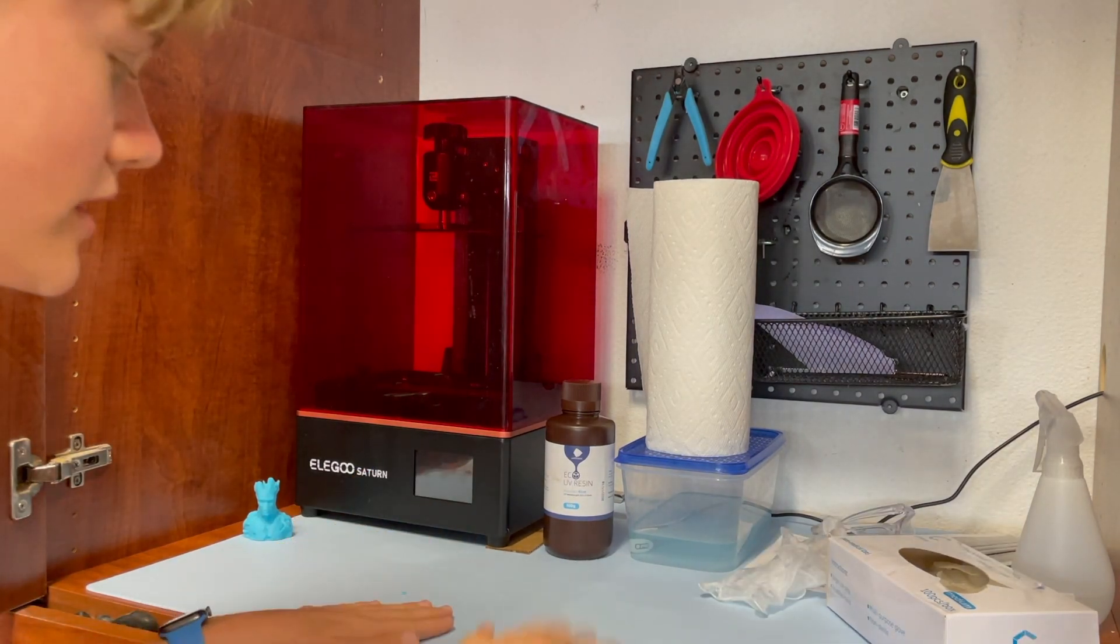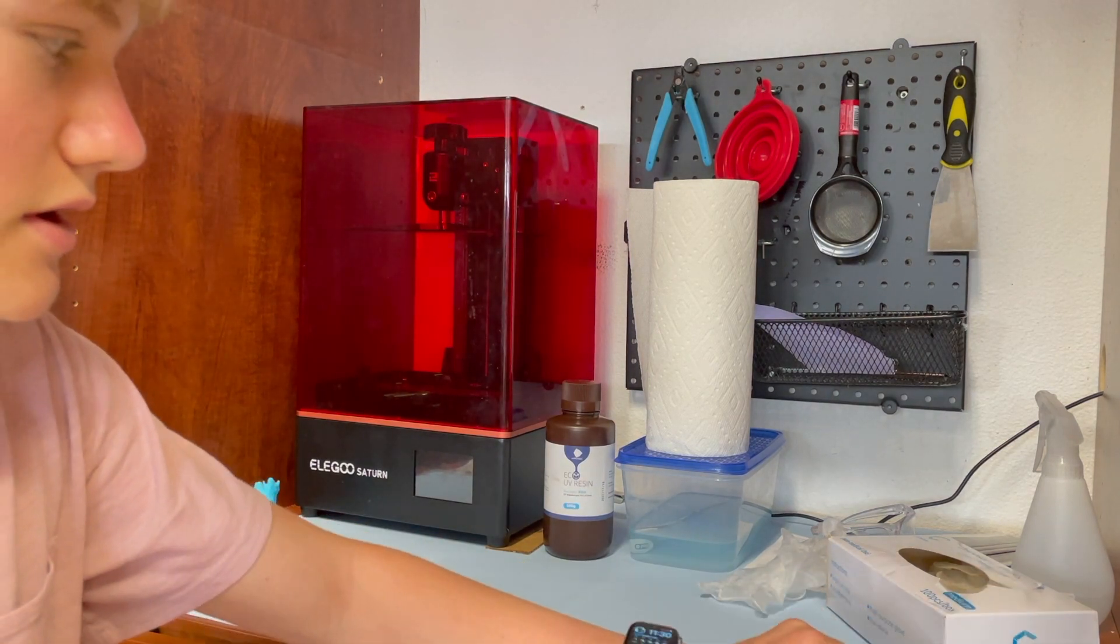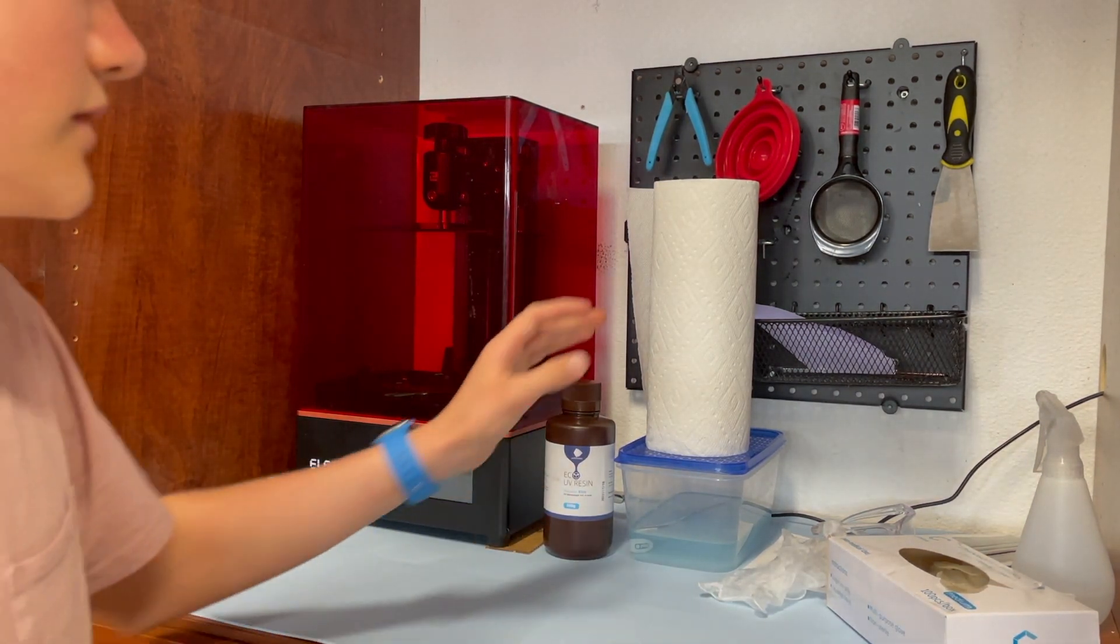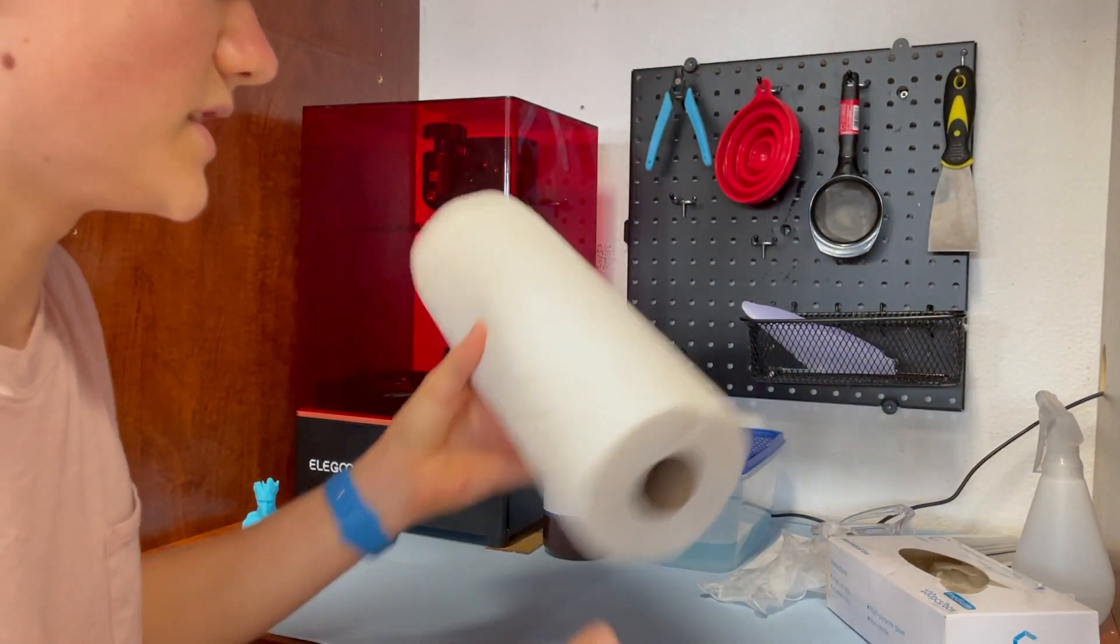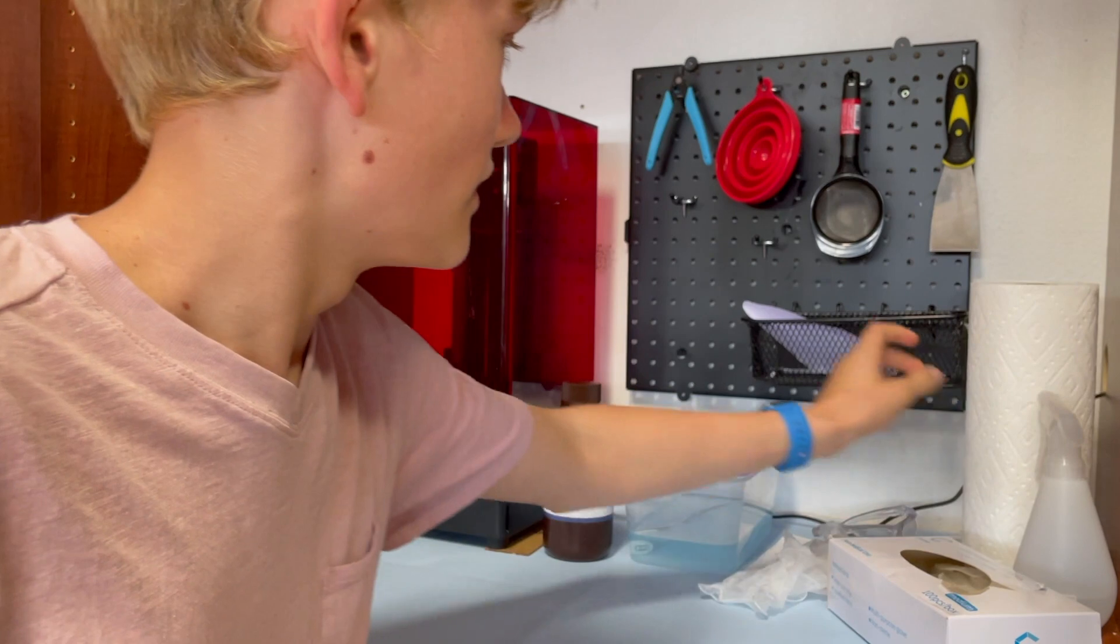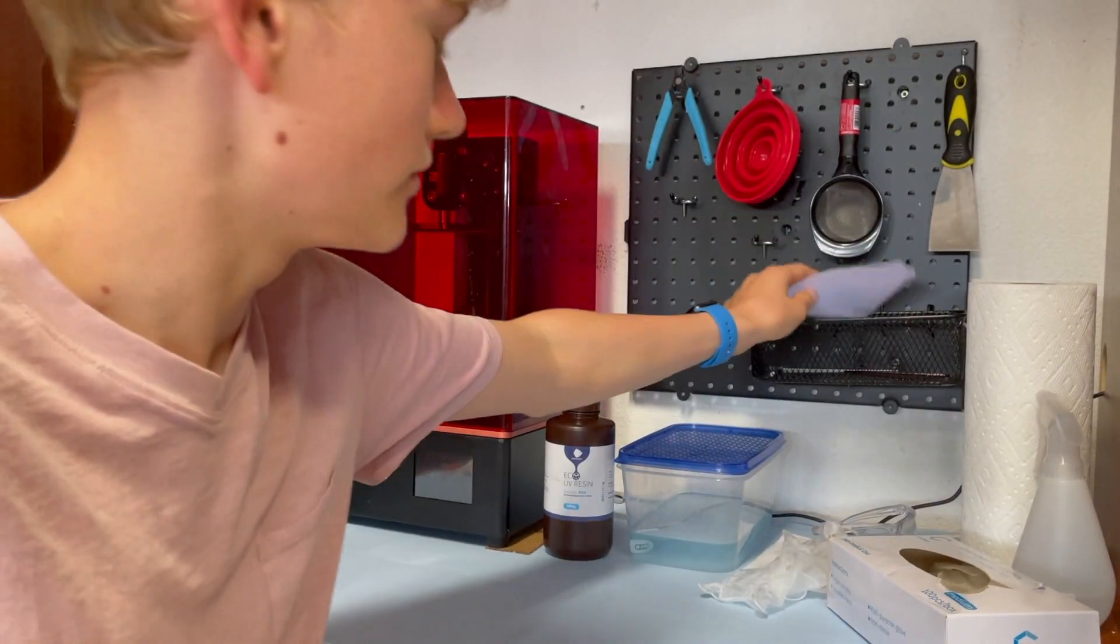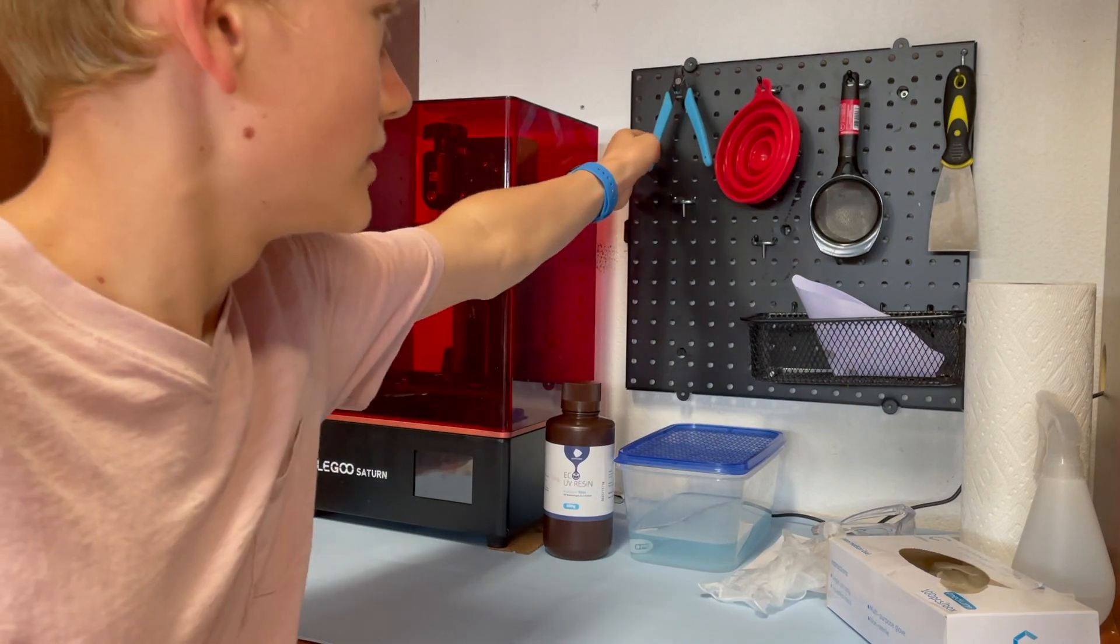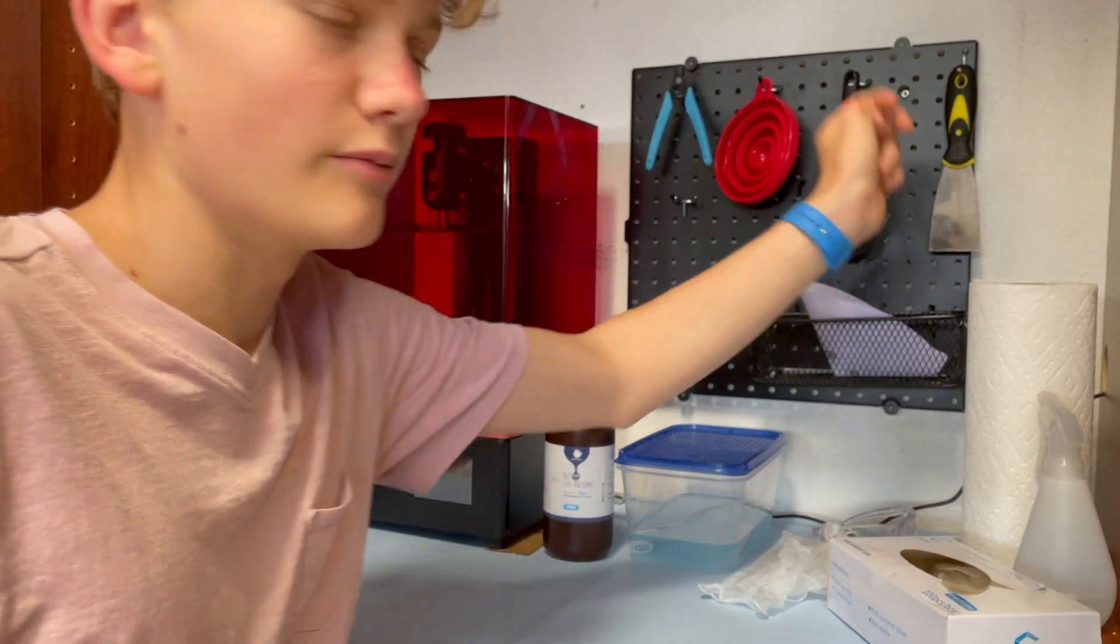I would also recommend a silicone mat. I got this one off of Amazon. And things that you always want on hand, definitely paper towels. And then I also have my Allen wrenches and a basket, all the sizes for this. Clippers, a funnel, a filter for the funnel, and then your metal scraper.